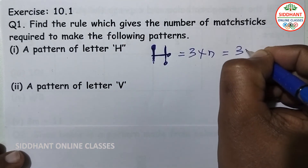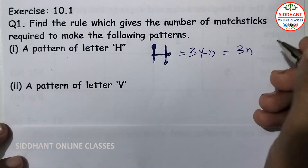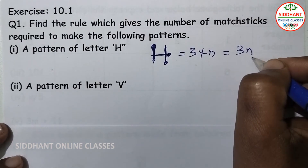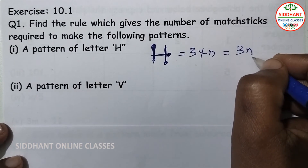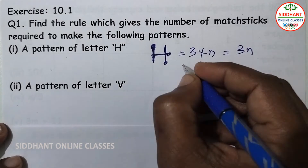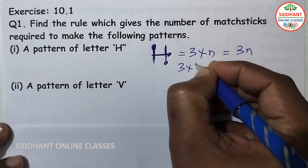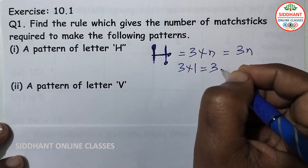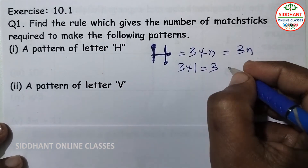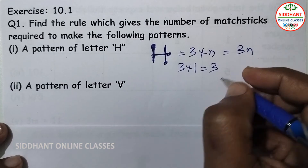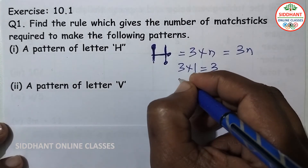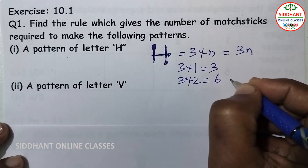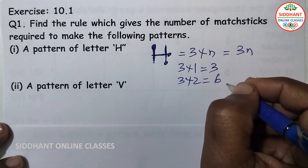Here, 3n means n is the number of letters. If you are going to use one letter, then 3 into 1 means three matchsticks are required to write letter H. If you are going to use two letters, that means 3 into 2, so six matchsticks are required to write letter H.